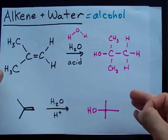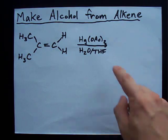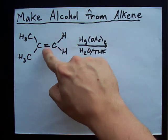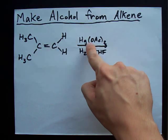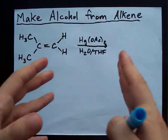There's a second way that organic chemists prefer to use, which involves an organomercury intermediate. Here's what I mean: if you see an alkene with HGOAC2, that's because you're going to make an alcohol.